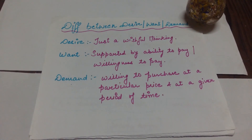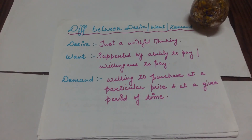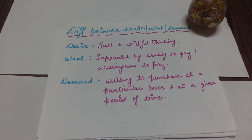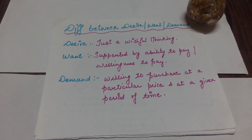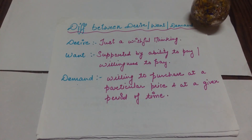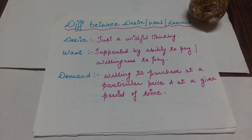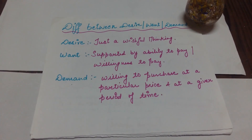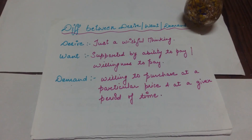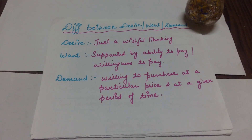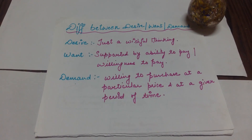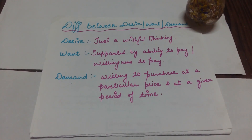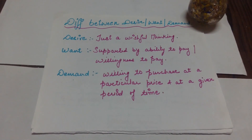You are willing to pay and you have the ability to pay. Demand is when you actually purchase the thing in the market at a particular price and at a given period of time. So desire is just a wish. Your desire becomes your want when you have enough money and are willing to pay. And your want becomes your demand when you actually purchase the commodity.